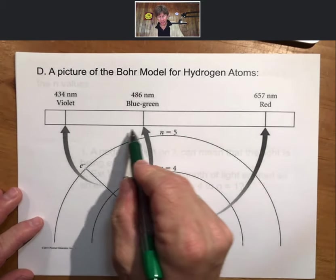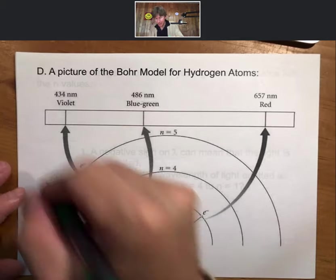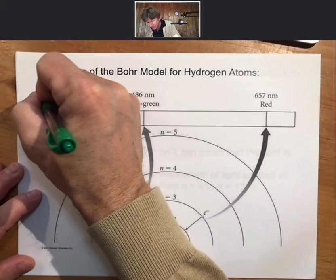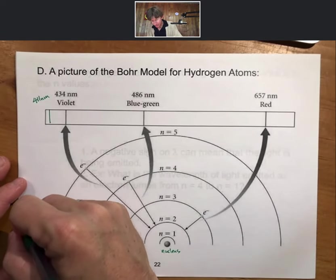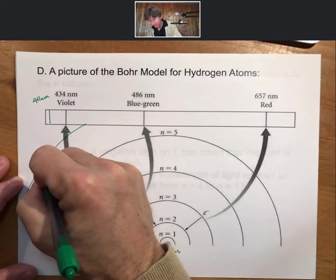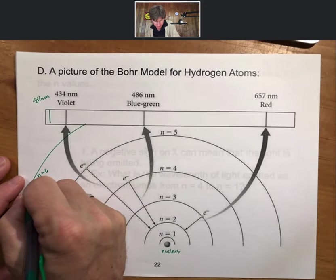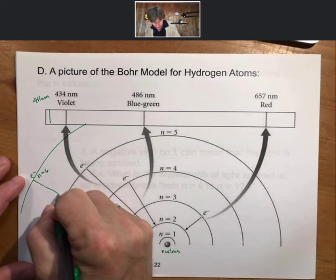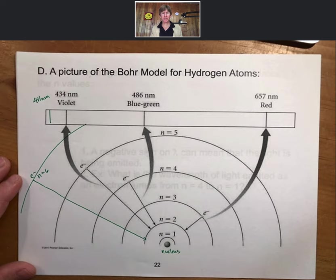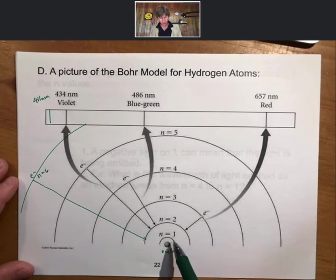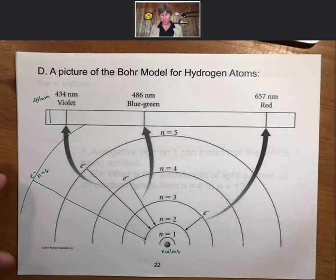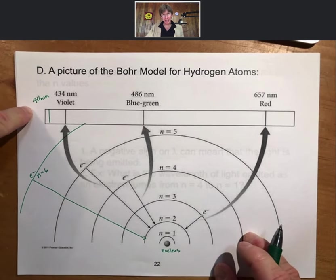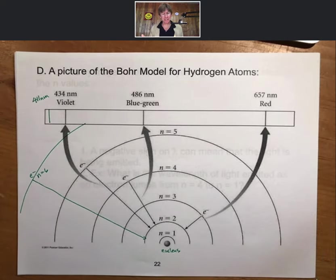Bigger jumps will be higher energy and shorter wavelength. At 411 nanometers, that transition is from N equals 6 to N equals 2. Each of these jumps going down to N equals 1 will be larger energy than the visible region — they'll be in the ultraviolet area. These are just the ones we can see in the visible region.